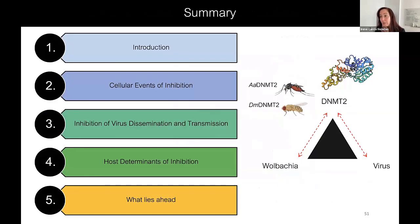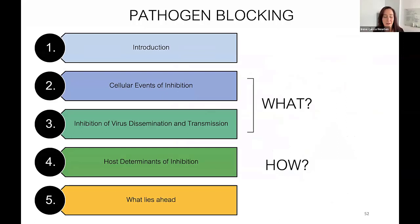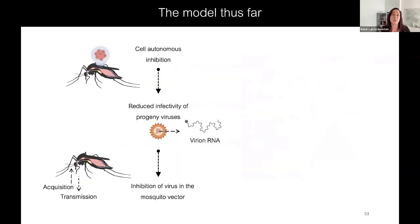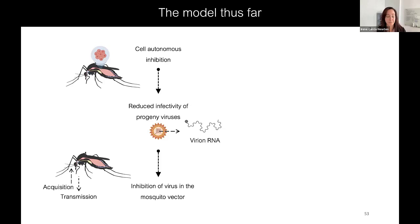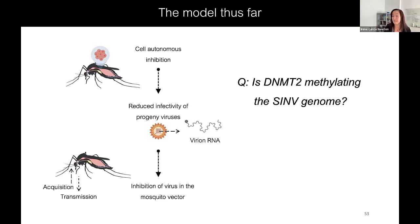So what we discovered in trying to identify host determinants of inhibition is this interesting gene DNMT2 — the lone methyltransferase in dipterans — that shows evidence of positive selection and is pulled in different directions by Wolbachia and virus. The model thus far is one of cell-autonomous inhibition in the animal leading to reduced infectivity of progeny viruses, primarily related to the virion RNA genome itself being modified in the presence of Wolbachia. Likely MT2 interacts with virion RNA in some way, leading to inhibition of virus in the mosquito vector and a decrease in the mosquito's ability to acquire and transmit the virus. The real question is: is DNMT2 methylating the Sinbus virus genome, and are there other genome modifications important in Wolbachia-mediated inhibition?